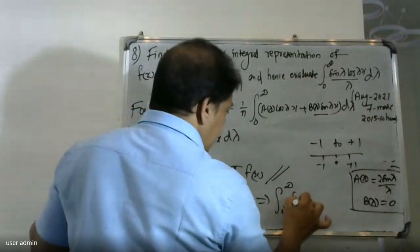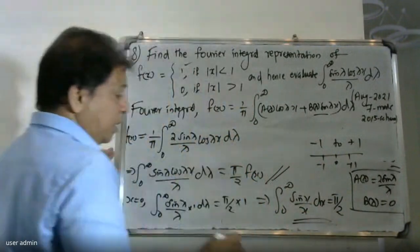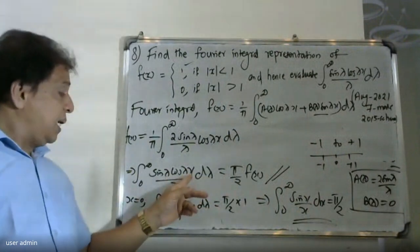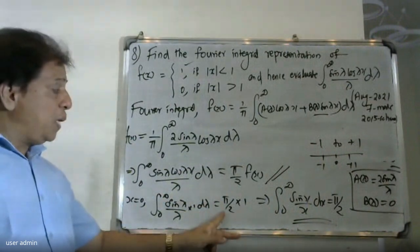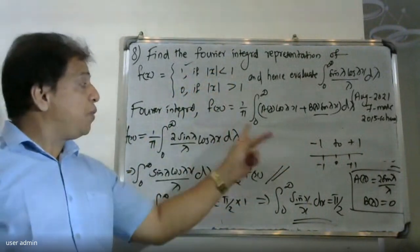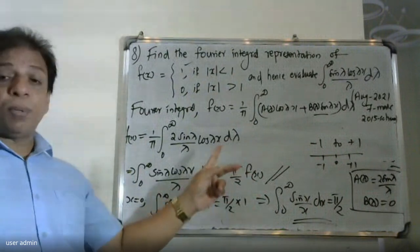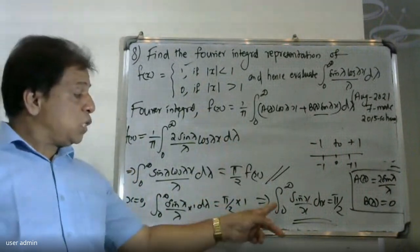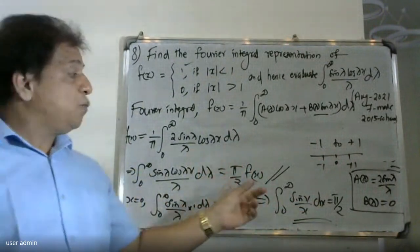To evaluate the integral, we substitute x equal to zero. Then the integral from zero to infinity of sin(x) divided by x dx equals pi times f(0). Since f(0) equals 1, we get the result that the integral from zero to infinity of sin(x) divided by x dx equals pi divided by 2.